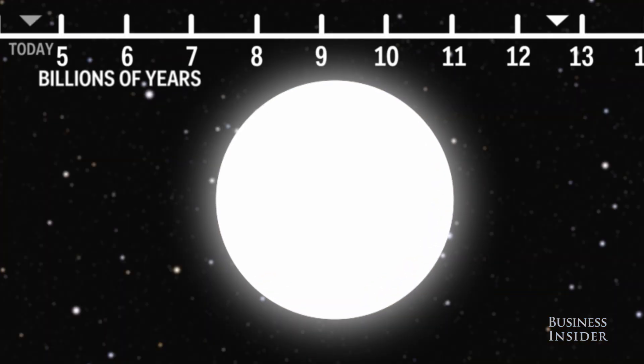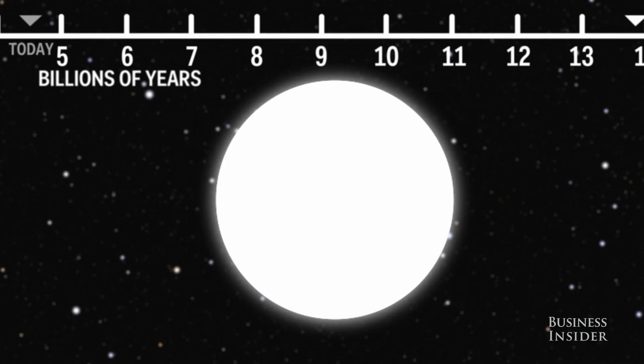The Sun will spend the rest of its days as a white dwarf, slowly cooling and dimming as time passes. By this point, Earth will be completely inhospitable.